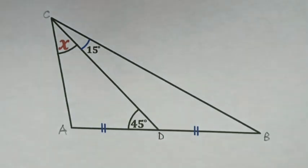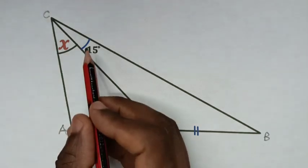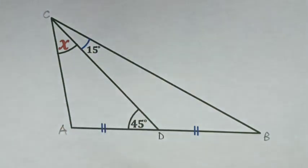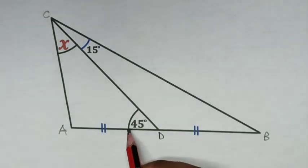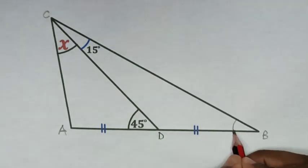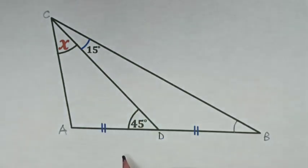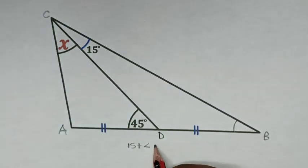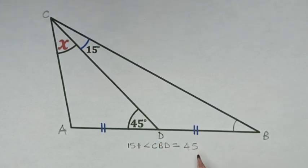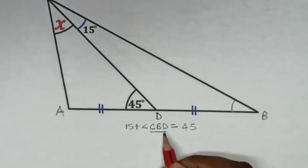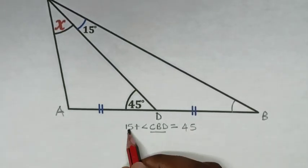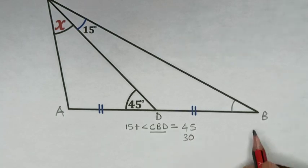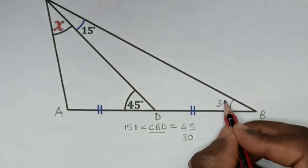In the first step, from the exterior angle property, this angle plus this angle is equal to this angle. So angle CBD is equal to 45 minus 15, which is 30. So this angle here is 30 degrees.